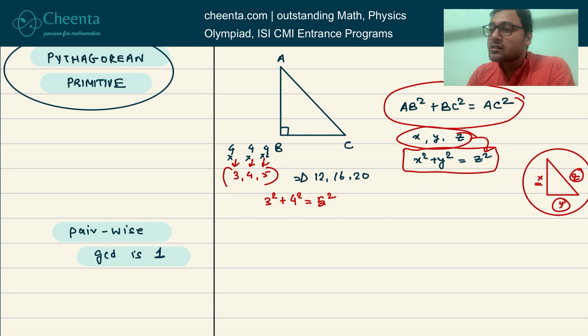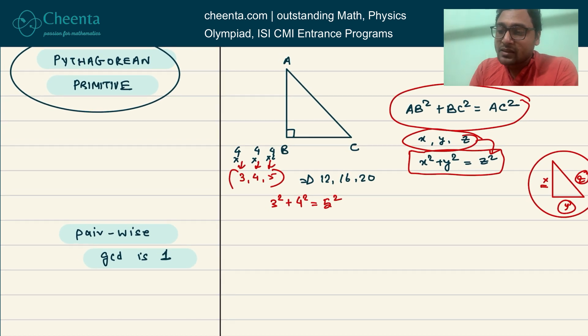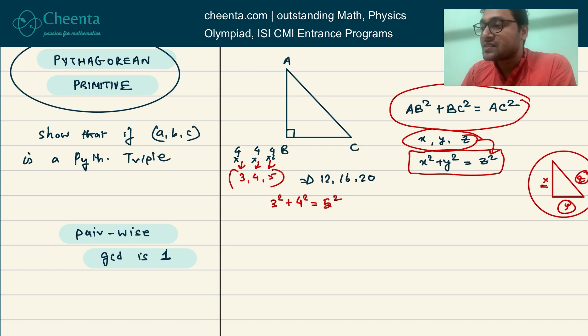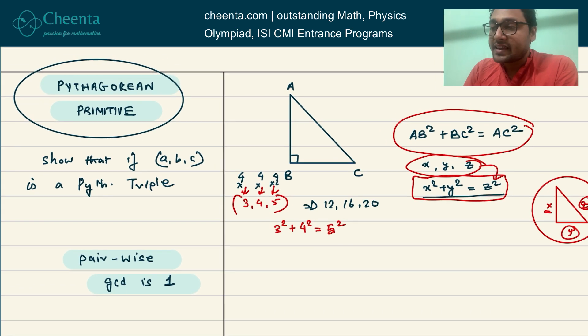I'll give you a little problem. Show that if A, B, C is a Pythagorean triple—meaning it satisfies A² + B² = C²—